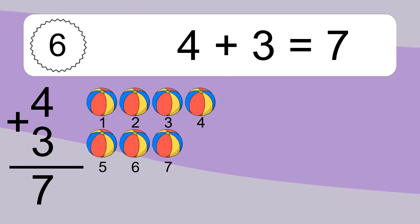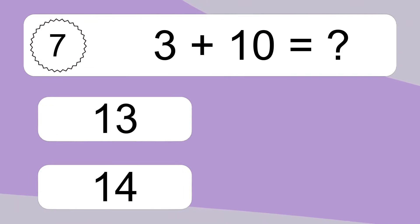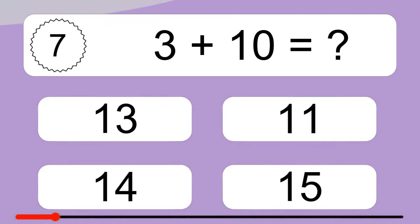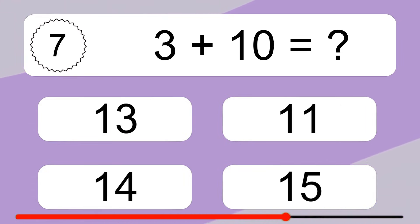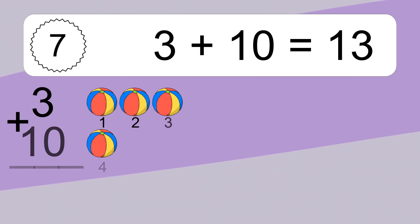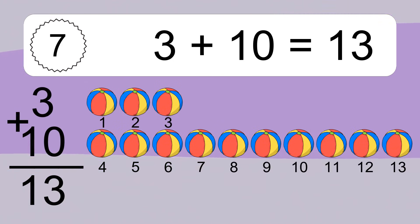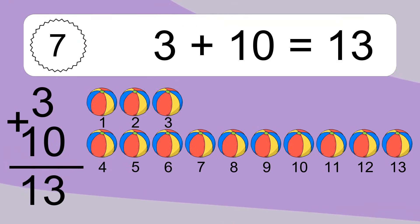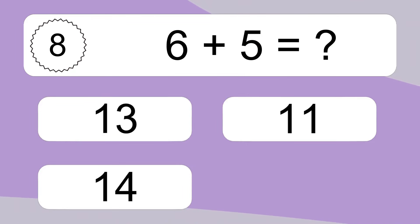Three plus ten equals what? Three plus ten equals thirteen. Let's count it: one, two, three, four, five, six, seven, eight, nine, ten, eleven, twelve, thirteen.